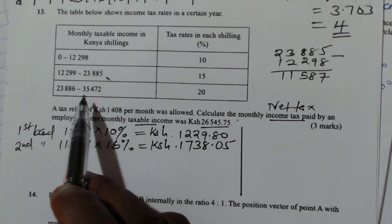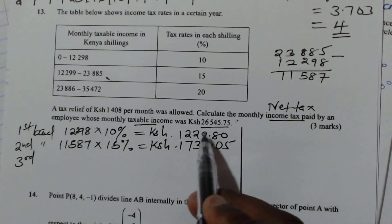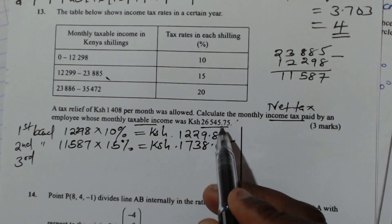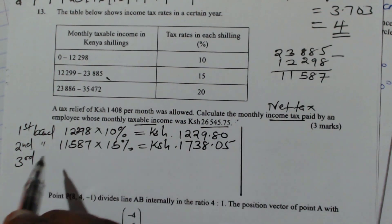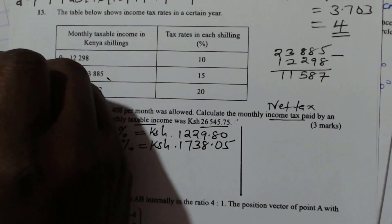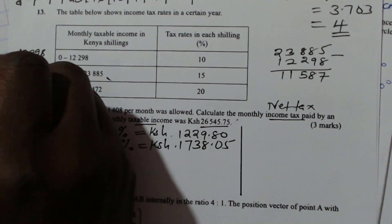So now we go to the last band. In the last band, remember the amount that you are taxing is 26,545. So we need to know, so far, whatever we have taxed, what is remaining. This is how we do it. So we add, we have taxed at 12,298, and 11,587.